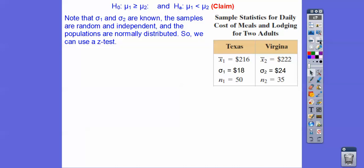Note that standard deviations are known. The samples are random, it's stated that, and independent, and the populations are normally distributed. Because the sample sizes are both greater than or equal to 30 we're safe on that too. So we can use a z-test.